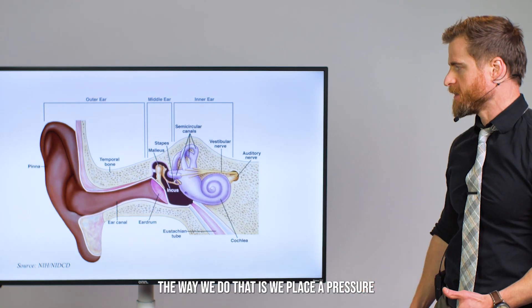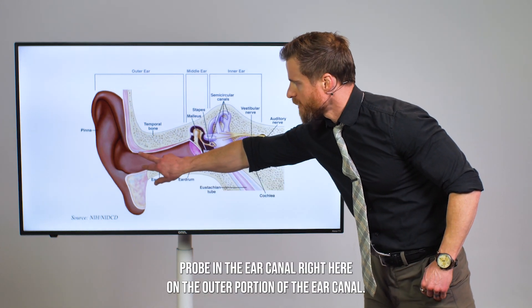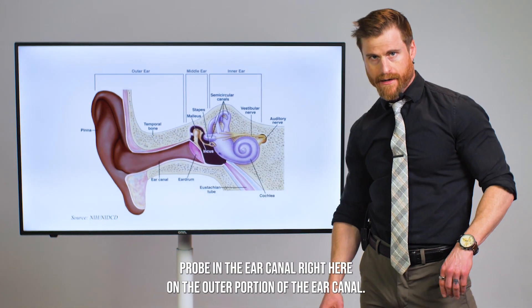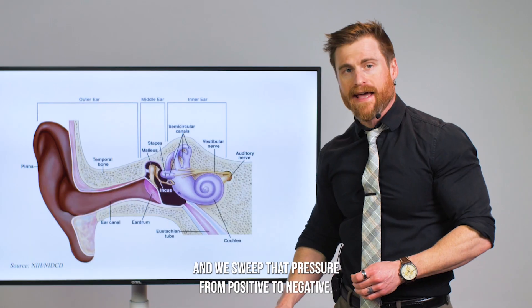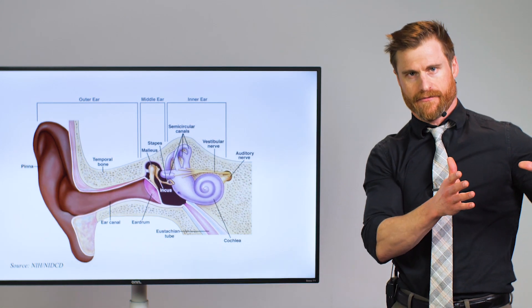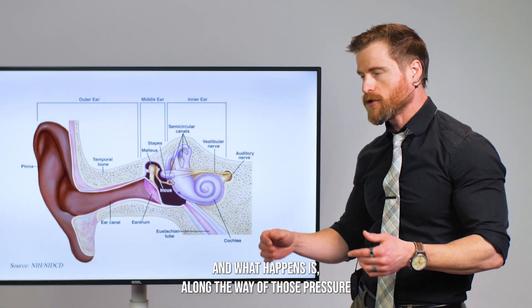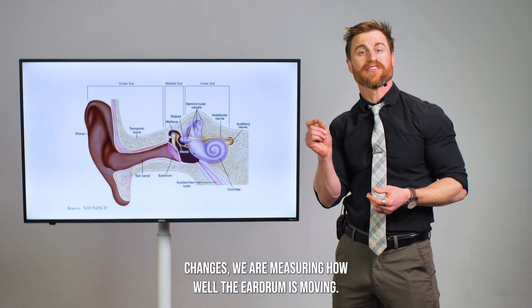The way we do that is we place a pressure probe in the ear canal right here on the outer portion of the ear canal. We create a seal, and then we apply some pressure in the ear canal and sweep that pressure from positive to negative. What happens is along the way of those pressure changes, we are measuring how well the eardrum is moving.